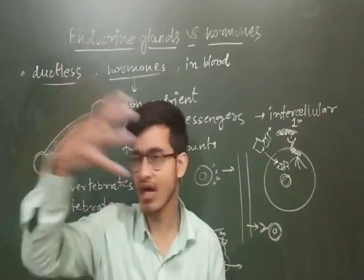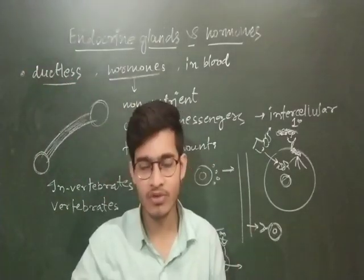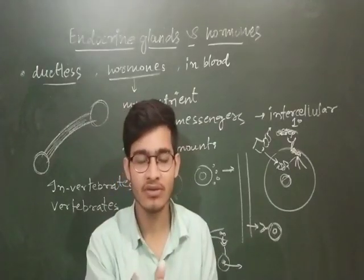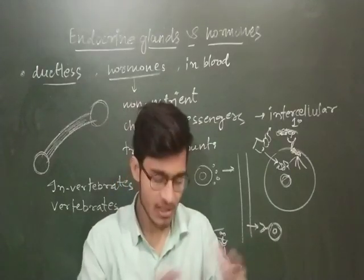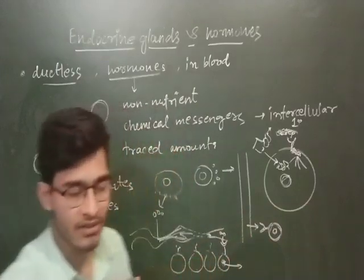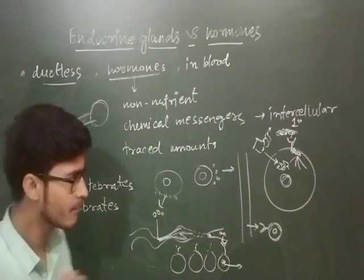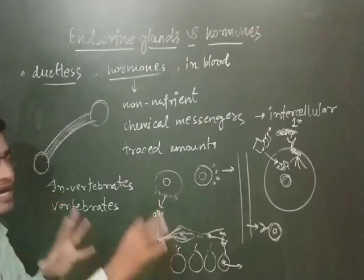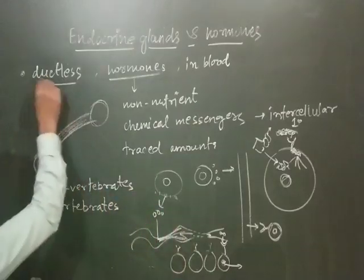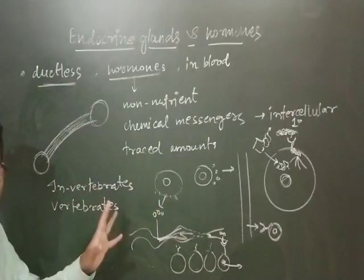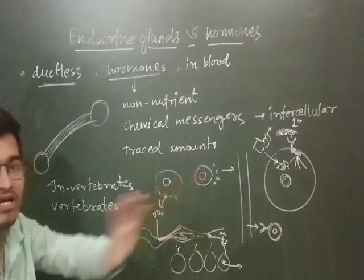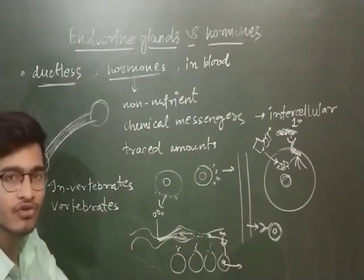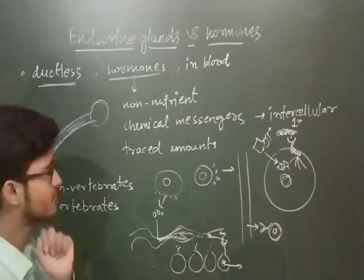So in summary: the signal is secreted, it goes into the blood flow, is taken up by specific receptors only, and the desired expression is given. This is how the endocrine system works. They are ductless because they travel by the blood flow and do not require any tubes, connections, or ducts.